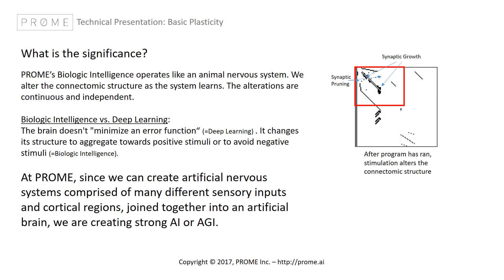As different sensory inputs stimulate the cortical neurons that make up cortical regions, we find that the systems begin to alter the network in a way that gives way to general intelligence. Huge training sets are not necessary due to the animal emulation we create. This is all made possible due to this basic plasticity baked into our advanced AI called biologic intelligence. Thank you, and go to prohm.ai for more information.